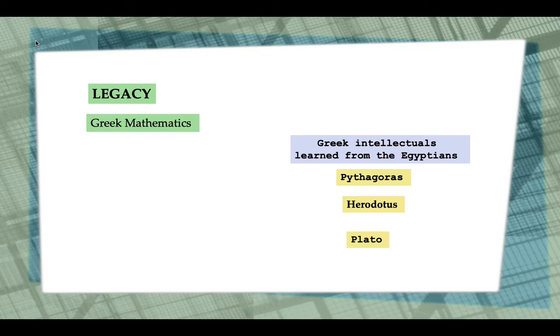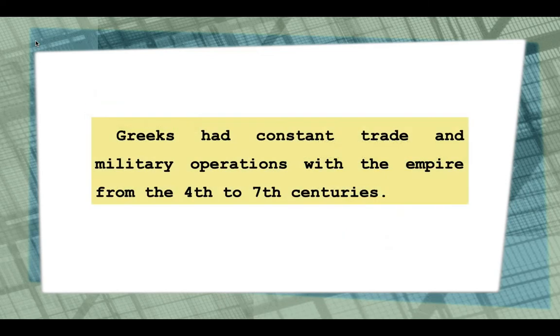Many Greek intellectuals learned from Egyptians, such as Pythagoras, Herodotus, and Plato. This was possible because Greeks had constant trade and military operations with the empire from the 4th to the 7th centuries.